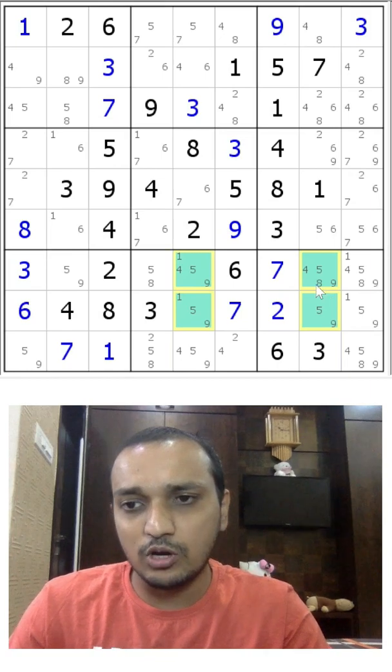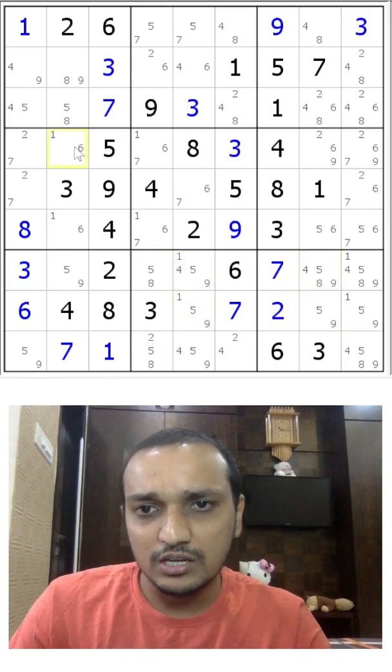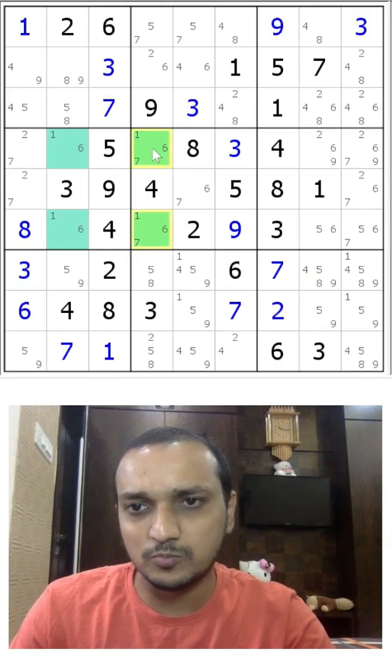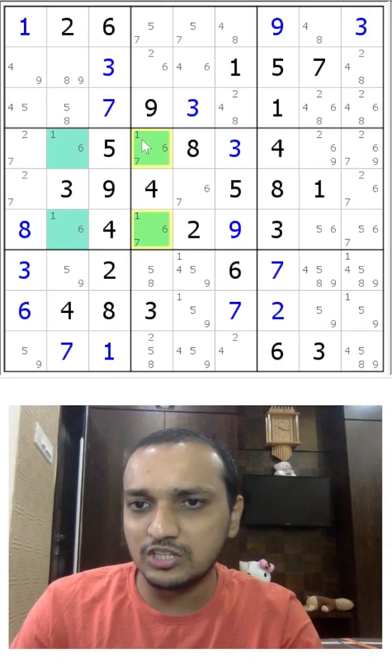And to look for that, if you see here, you have a 16-16 pair here, right? And which means that these cells cannot be a 16-16 pair. You need to have 7 in one of these two cells.